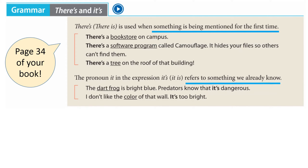With 'it's', it refers to something we already know. For example: I don't like the color of that wall. It's too bright. Obviously 'it' refers to color.